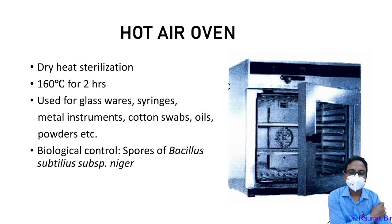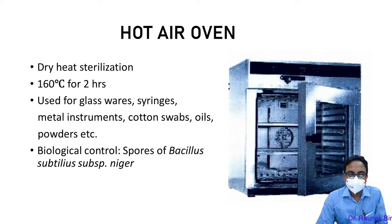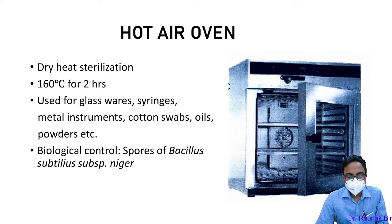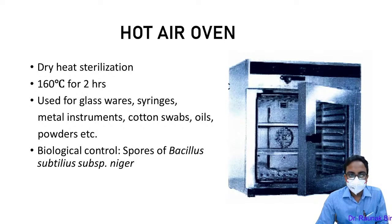Coming firstly to the hot air oven: it is a dry heat sterilization method. We keep the articles and heat at 160°C for two hours. Articles sterilized by this process include glassware, glass syringes, metal instruments, sharp metal instruments, cotton swabs, and all types of oils such as glycerin and paraffin, and powders like the dusting powder used for gloves.